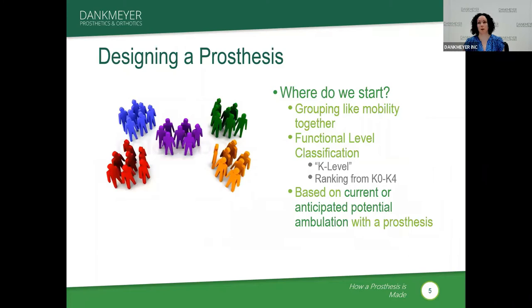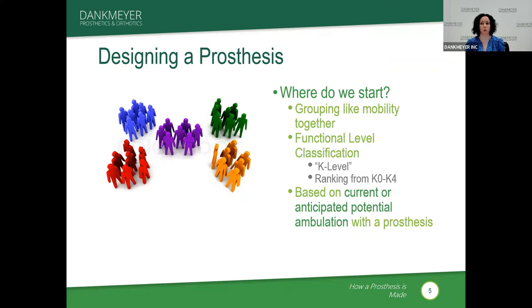So where do you start with something like this? If it's such a huge spectrum, we like to start by first narrowing it down into major groups — thinking about mobility in terms of general categories. Medicare has made that easier with functional level classification. They have what's called a K-level, and most insurances also follow the same guidelines. The K-level ranks from K-0 to K-4, based on the individual's current or anticipated potential ambulation for prosthesis.